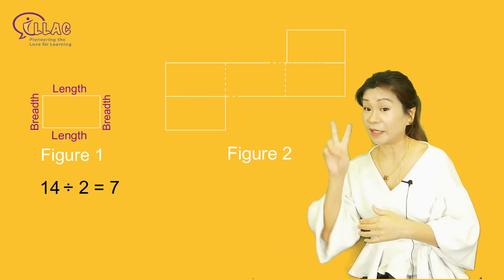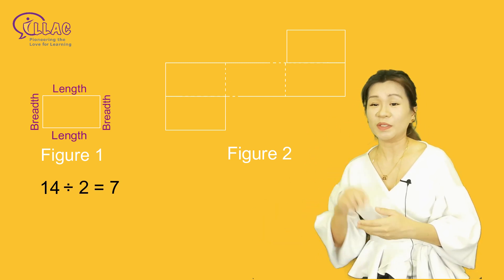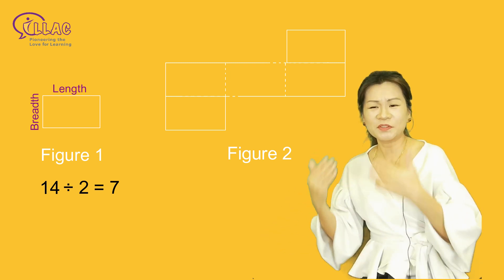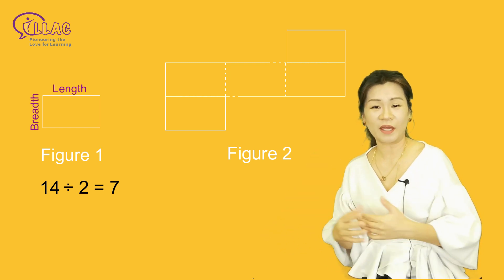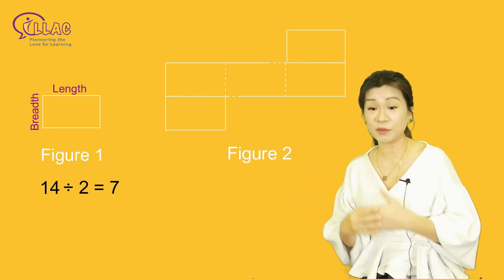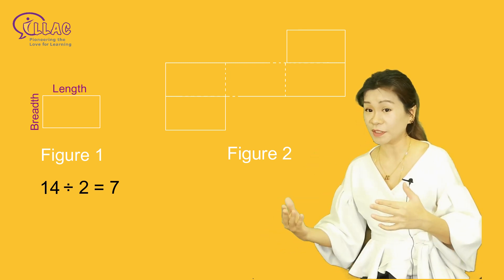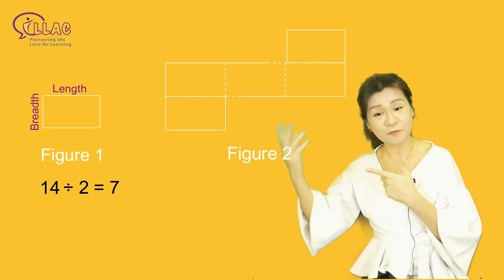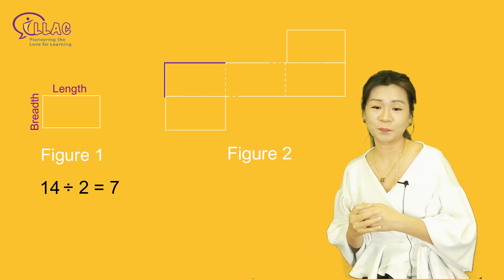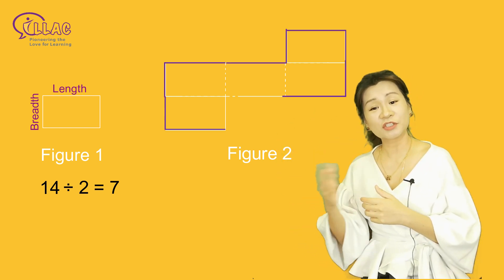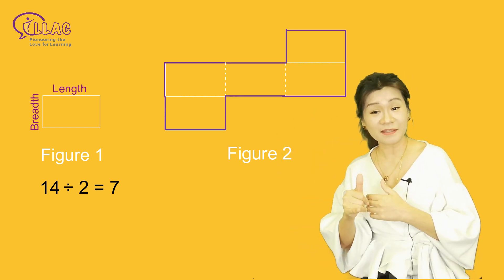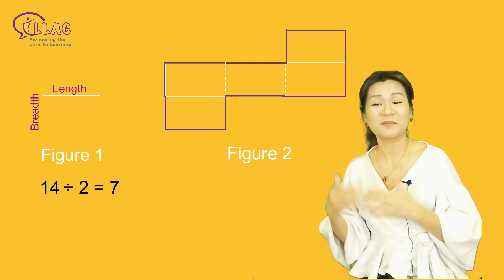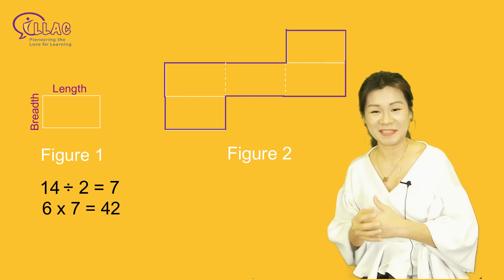Given that length plus length plus breadth plus breadth is 14 cm as given in the question, dividing it by 2 will give us length plus breadth. So all we have to do now is to count the groups of length and breadth that we have around Figure 2. Six groups of length and breadth will give us 42 cm.